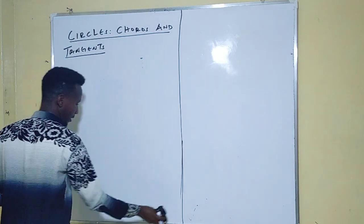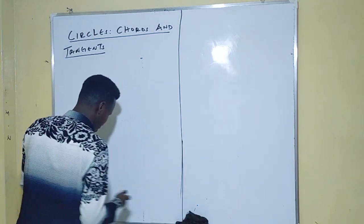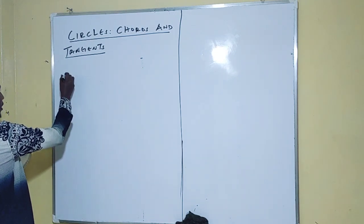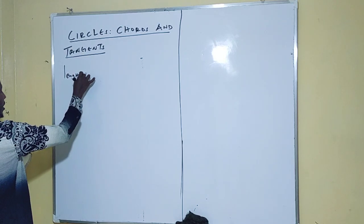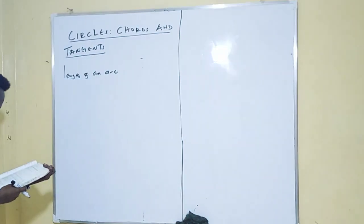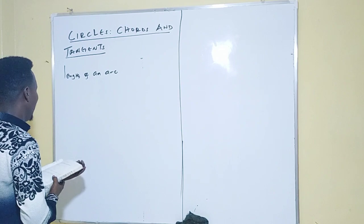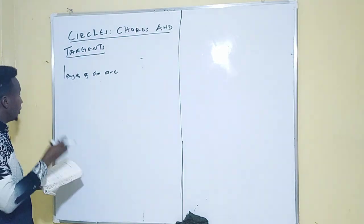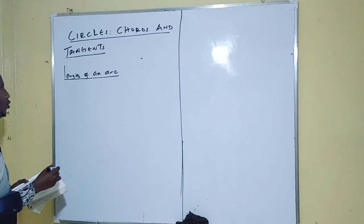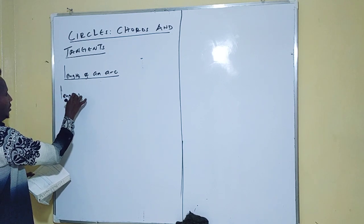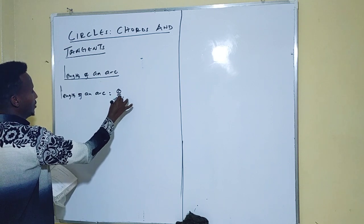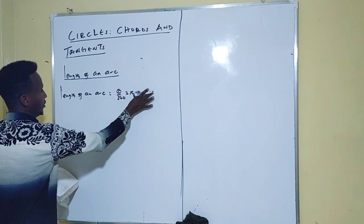Knowing that, we'll go ahead and see how this concept is examined in national exams. We are going to learn what you normally call the length of an arc. The length of an arc has a formula: length of an arc is equal to theta over 360, times 2πr.